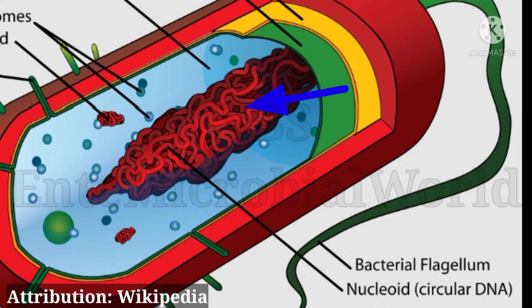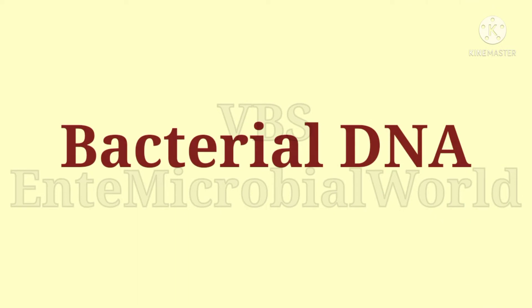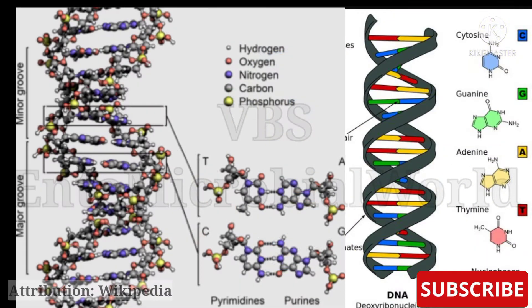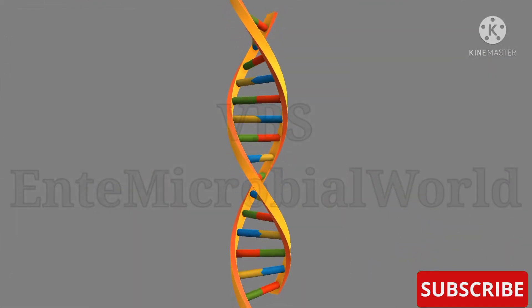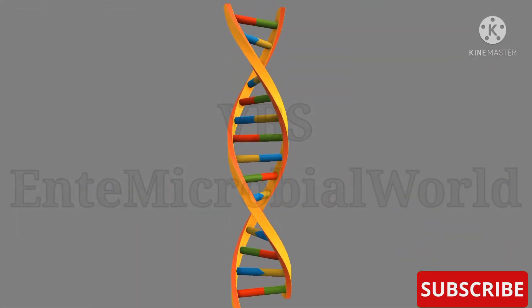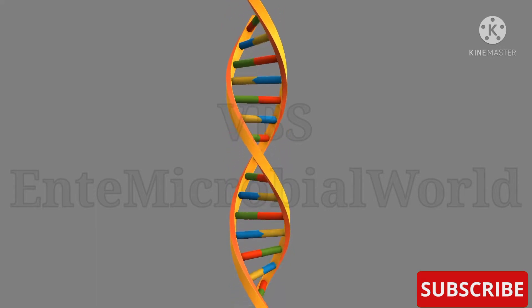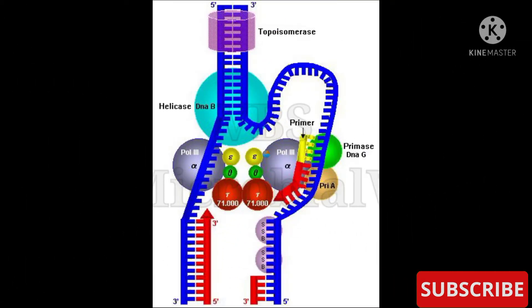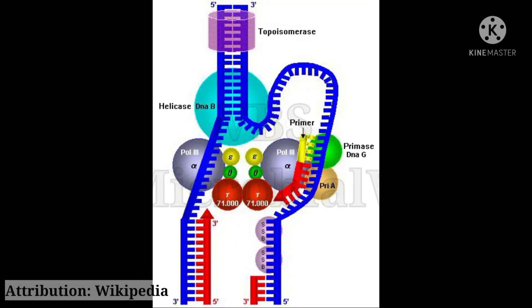Next, we are going to see about bacterial DNA. The DNA molecule is composed of two chains of nucleotides wound together in the form of a double helix. The DNA molecule replicates by first unwinding at one end to form a replication fork.